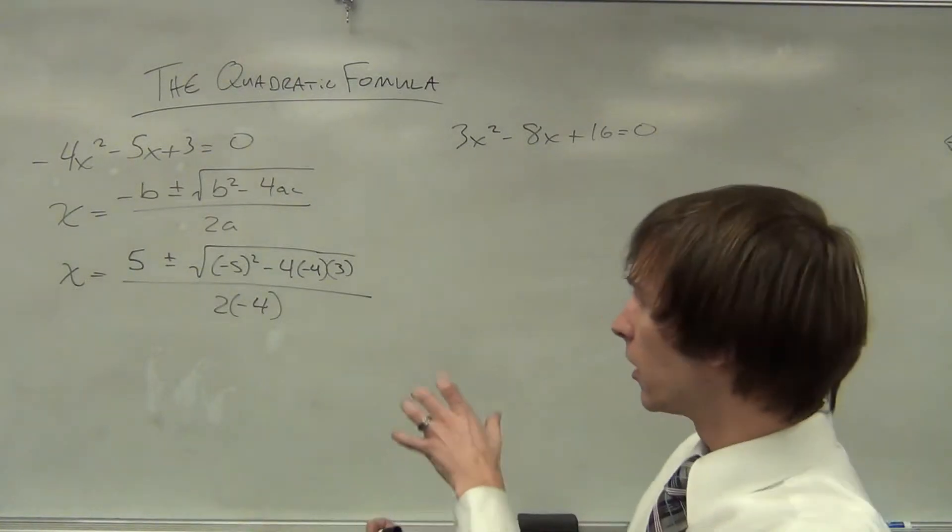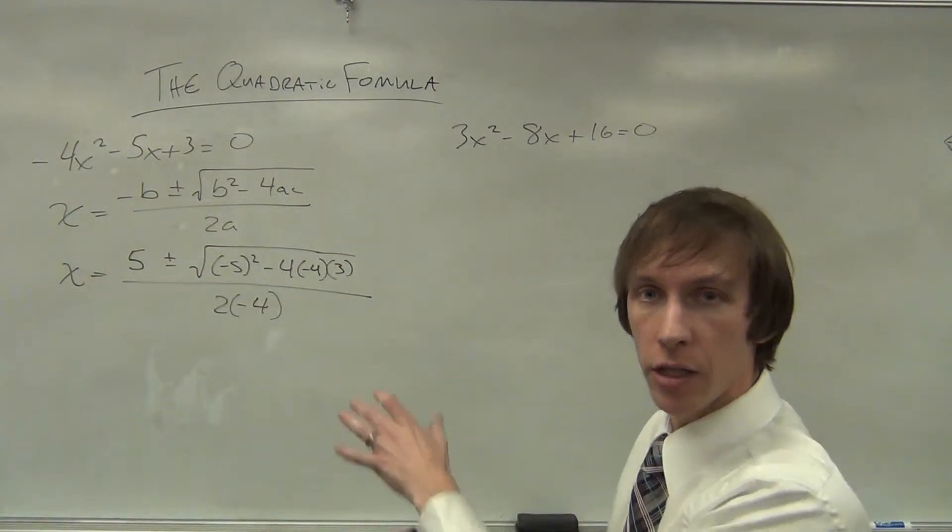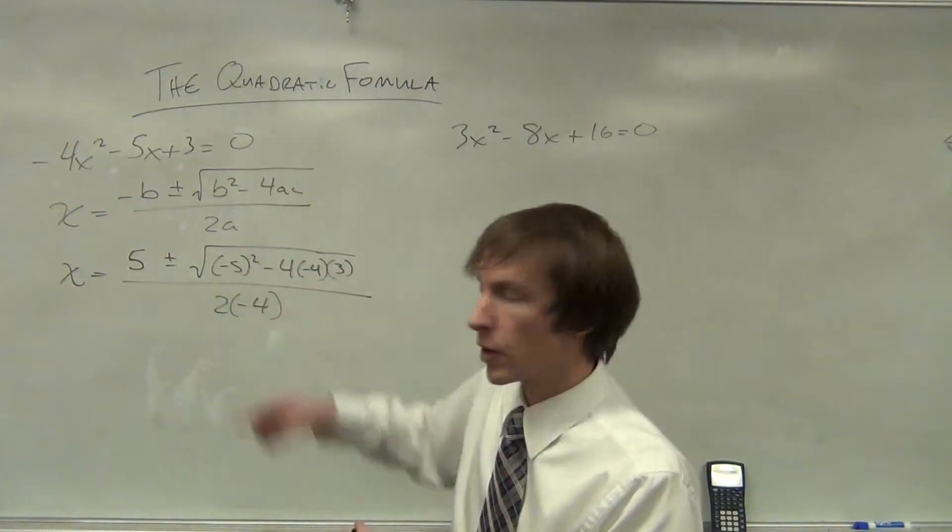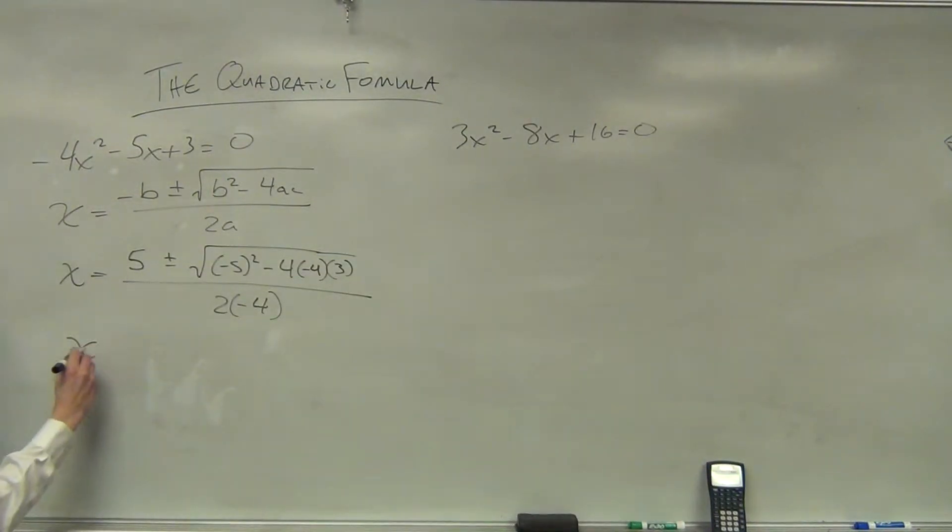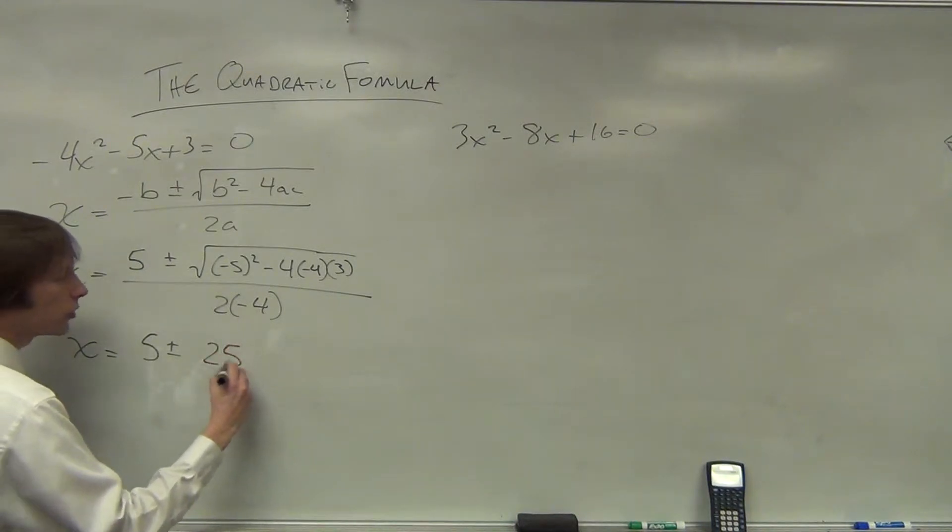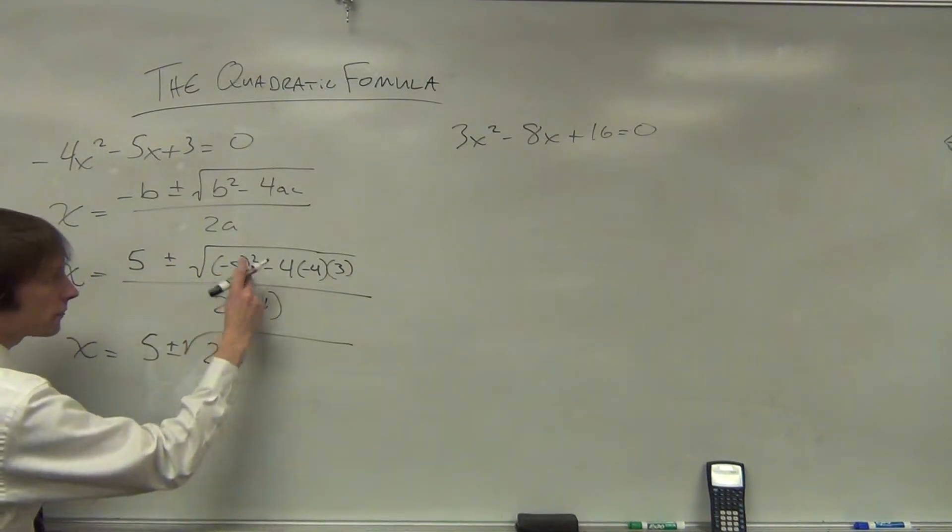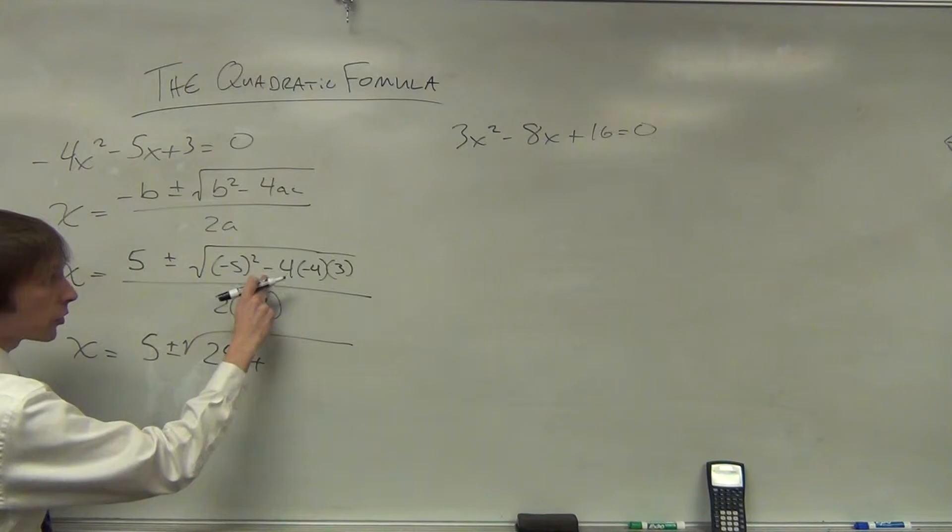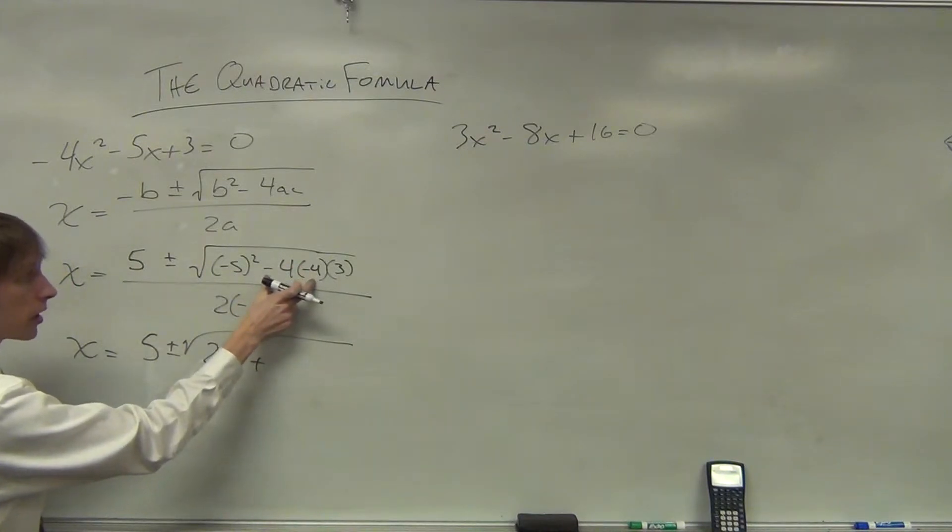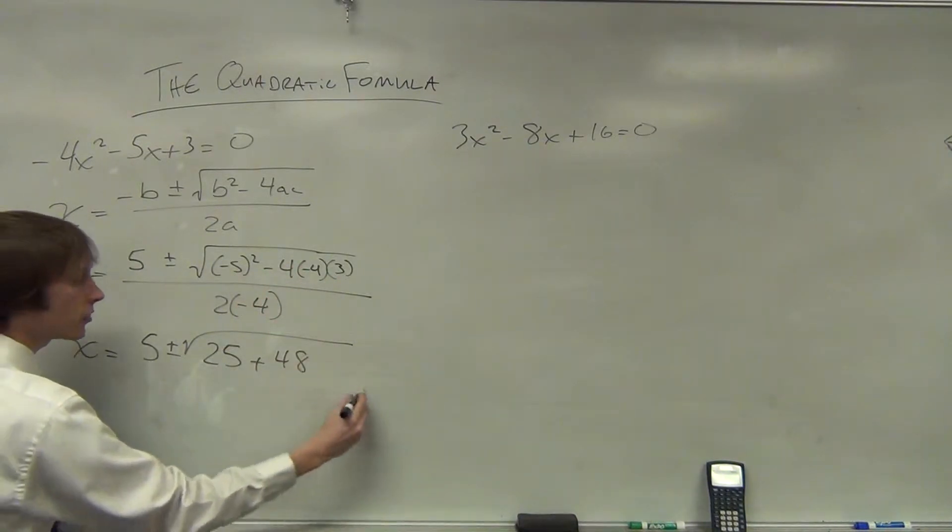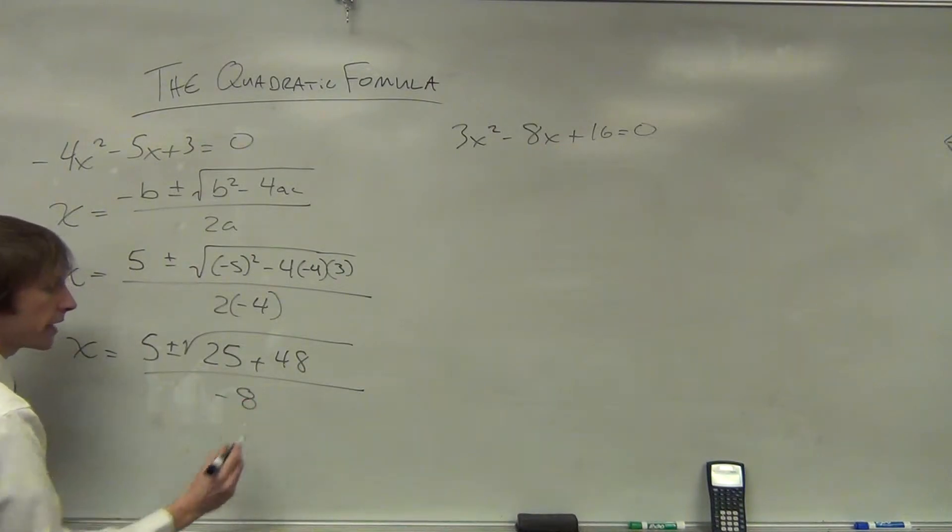Remember, the radicand is the discriminant here. It's the expression under the radical sign. So x is equal to 5 plus or minus the square root of 25 plus, so a negative and a negative, they're going to make a positive, 16 times 3 is 48 over a negative 8.